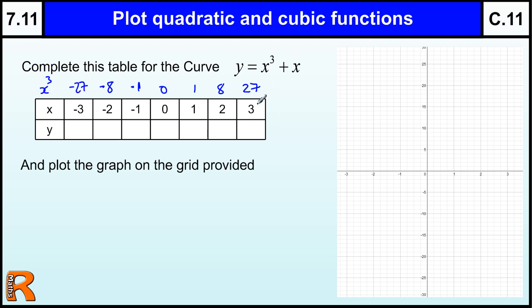And then we're just going to add x to that. So we'll start with 3. 3 cubed is 27, plus x, which is 3, makes 30. 2 cubed is 8, plus the x makes 10. 1 cubed is 1, plus the 1 makes 2. 0 plus 0 is 0. Minus 1 plus minus 1 is minus 2. Minus 8 plus minus 2 is minus 10. And you'll see these are just negative versions of these. So that's going to be minus 30.